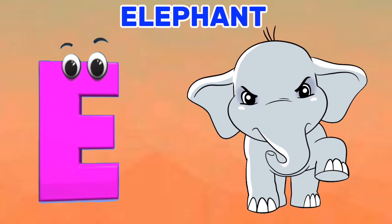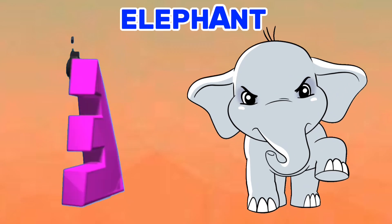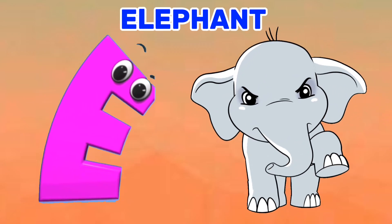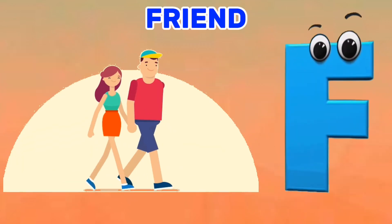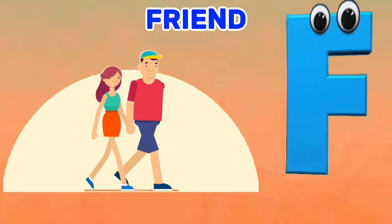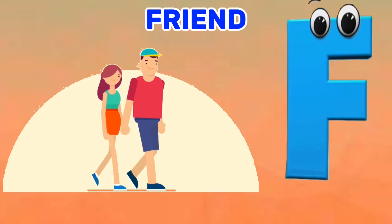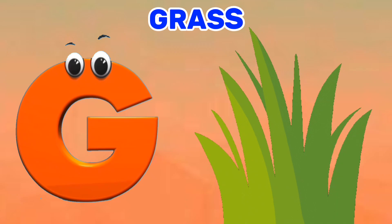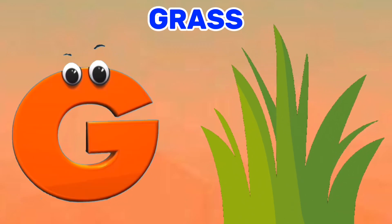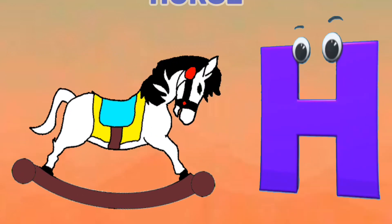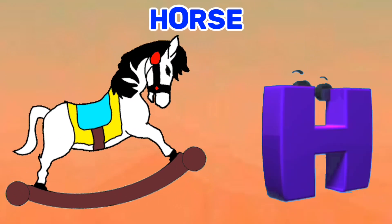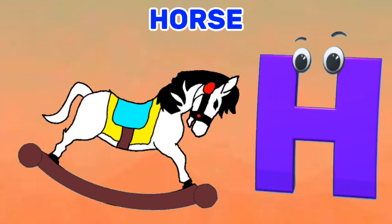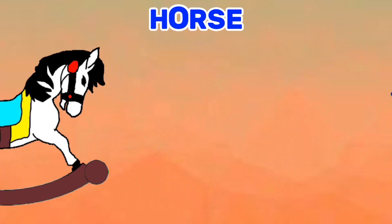E is for Elephant. E, E. Elephant. F is for Friend. F, F. Friend. G is for Grass. G, G. Grass. H is for Horse. H, H. Horse.